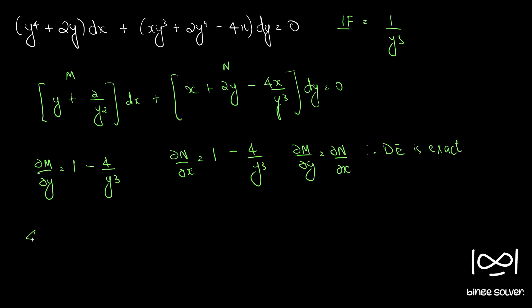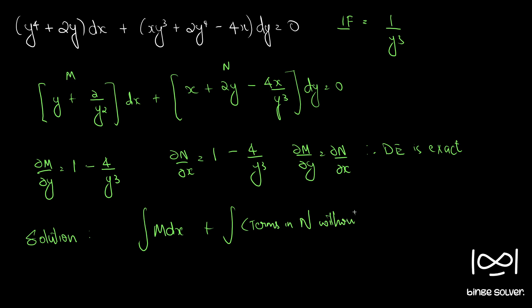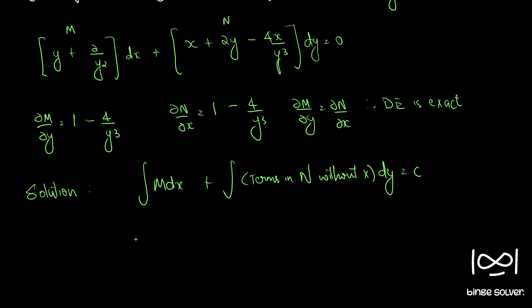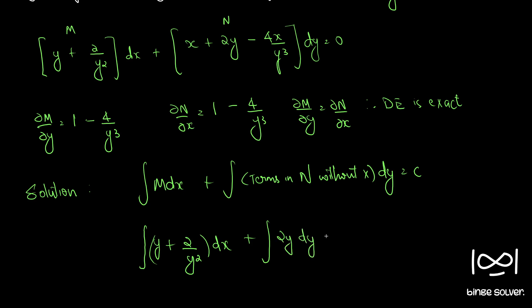The solution for exact equations is given by: integral M dx plus integral of terms in N without x, dy, equal to c. So integral M dx becomes the integral of y plus 2 by y squared, dx, plus integral of terms in N without x. We have 2y here, so 2y dy, equal to c.